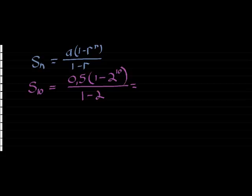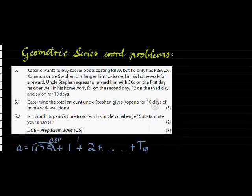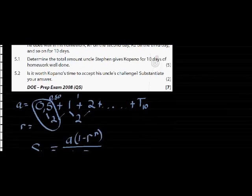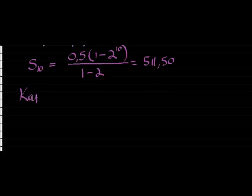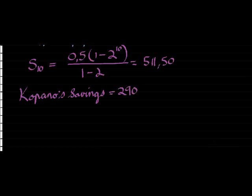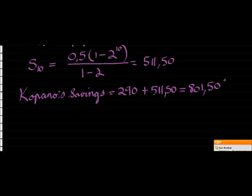Divided by negative 1 and I get 511 rand and 50 cents. Now, that is not enough for the boots. It's not enough. The boots cost 800 rand. But I do know he already has 290 rand. So what does Kapano have in his savings? It would be the 290 he originally had plus the 511 rand and 50 cents he would get from his uncle, which gives us a total of 801 rand and 50 cents. He'll have enough.